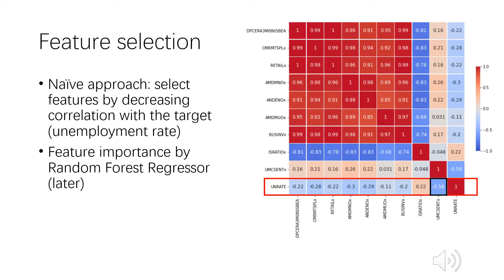So we did feature selection. The naive approach was just to select features by decreasing absolute value of correlation with the unemployment rate. We set a threshold of 0.5. For example, here, on this correlation heat map, we only pick UMSENTX, which is the Customer Sentiment Index, as a feature. By this method, we picked 10 features. And later, we also looked at the feature importance of random forest regressors.